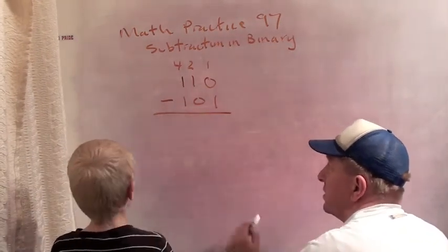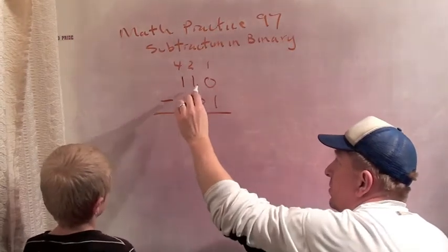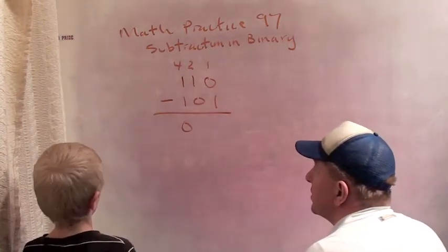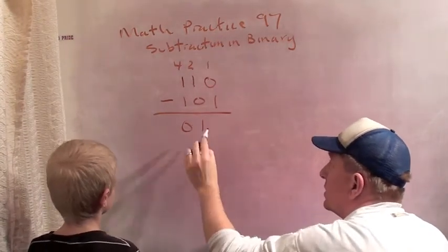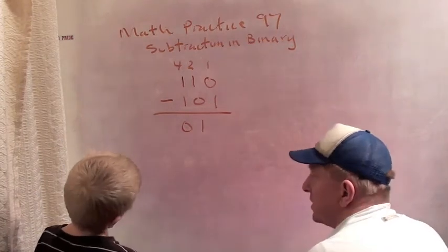Oh! So we already said this is the ones digit, the twos digit, and the fours digit. So maybe we can just subtract the same way. One minus one is zero. One minus zero is one.